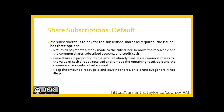In the event of a default for share subscriptions, there are three options, dependent on what the contract states. If the contract says to return all payments already made, we would reverse the accounts receivable and credit cash back to the shareholder for what they've already paid. If the contract states the subscriber would receive a proportion of shares for the amount already paid, we would issue them common shares for the value of cash already received, removing the remaining receivable and common shares subscribed accounts.